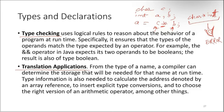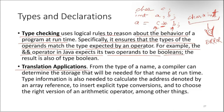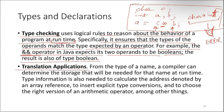Type checking uses logical rules to reason about the behavior of a program at runtime, specifically to ensure that the types of the operands match the type expected by the operator. For example, the AND (ambition) operator in Java expects its two operands to be boolean, and the result is also of type boolean. Such errors can also be detected at compile time itself.